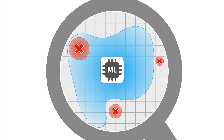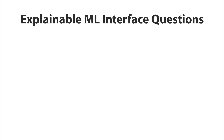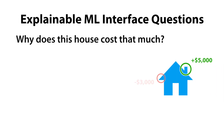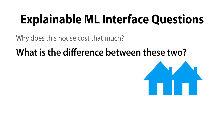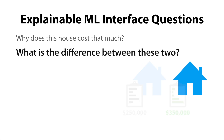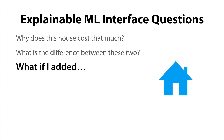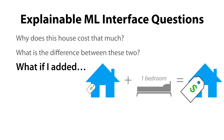But what sort of things should an interpretable machine learning system support? Consider a real estate model that predicts the price of a house given its features. We should be able to ask questions like, why does this house cost that much? We could also ask, what's the difference between two similar houses? We can also ask what-if questions — for example, what if I added an extra bedroom to this house? What would that do to its price?